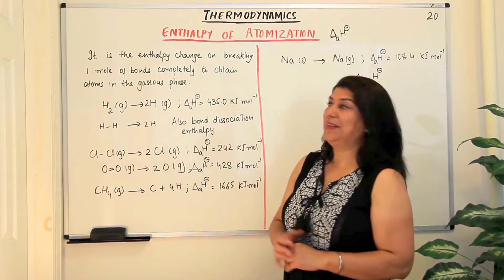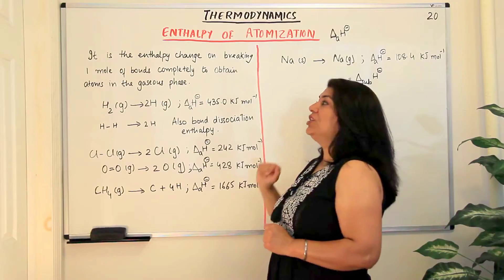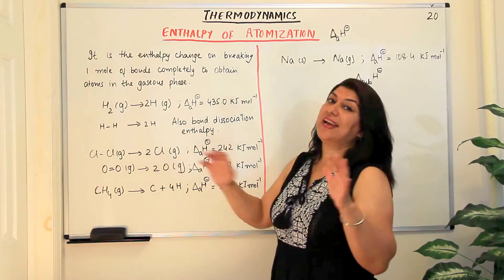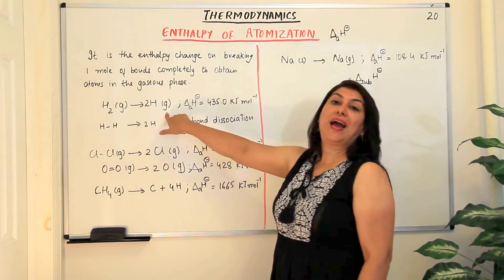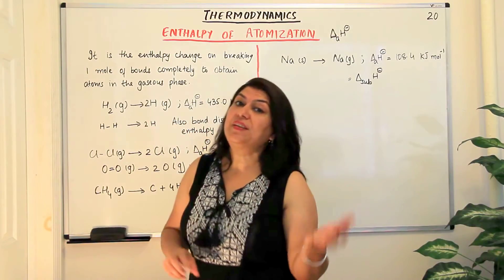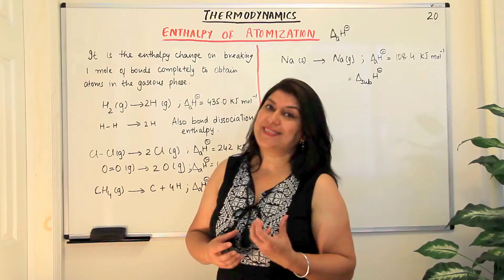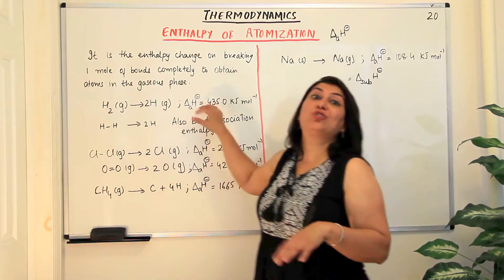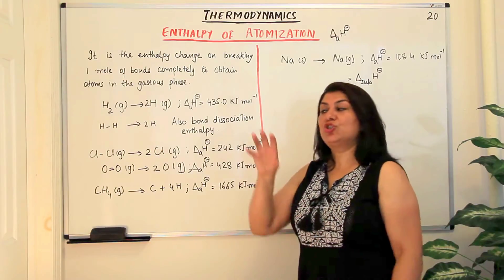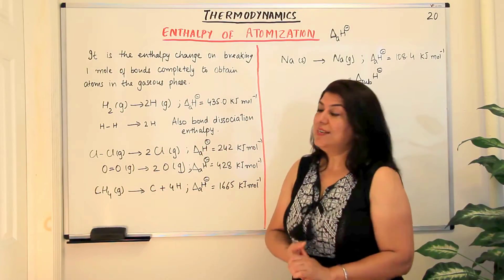Let us look at this a little more clearly. Enthalpy of atomization is the enthalpy change on breaking one mole of bonds completely to obtain atoms in the gaseous phase. It is important to have the reactants and the products in the gaseous phase, because if they are in some other state then there would be energy required to convert that state to the gaseous state, and that energy would also be counted as the enthalpy of atomization, which would actually be wrong by definition. Enthalpy of atomization should specifically be the energy required to separate the atoms in one mole of a substance.